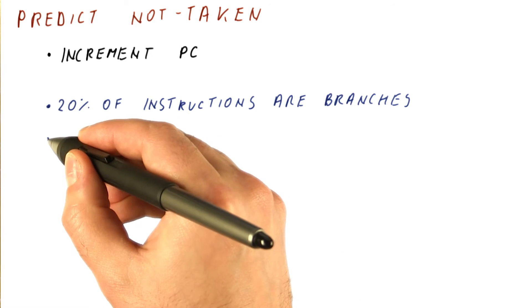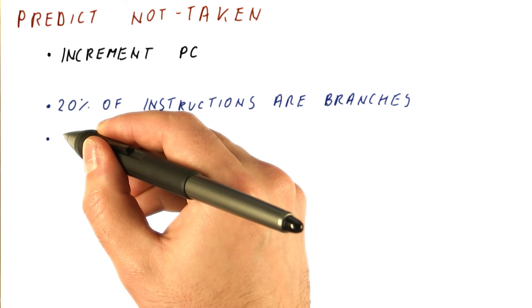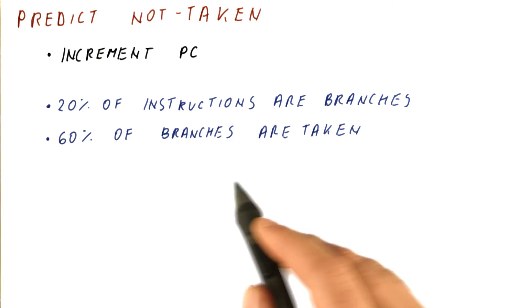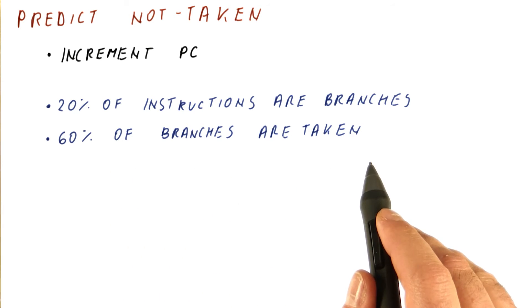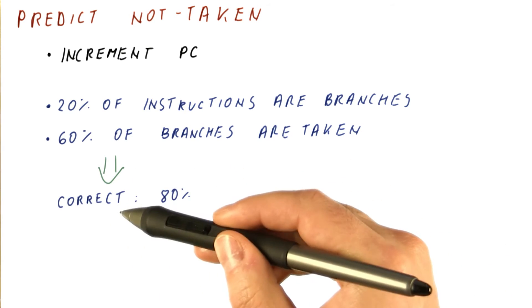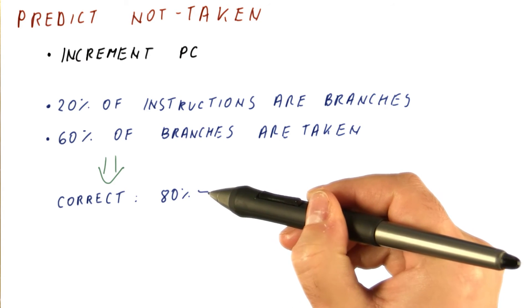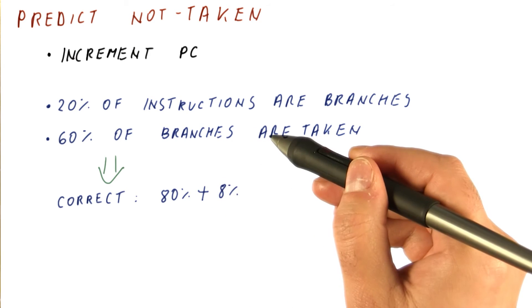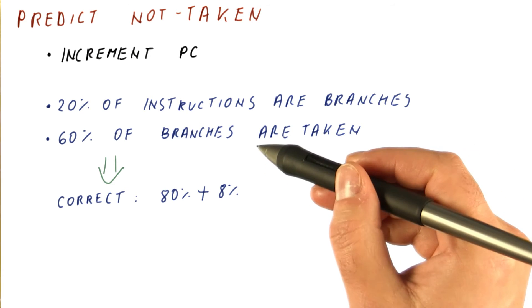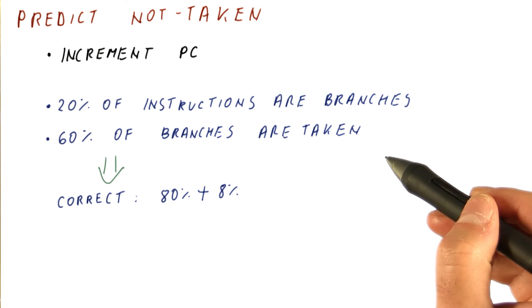For branches, a little more over half of the branches are taken. So let's say that 60% of branches are taken. So what we get is that this predictor is correct 80% of the time for non-branches and also another 8% of all the instructions because of the 40% of branches that are not taken.